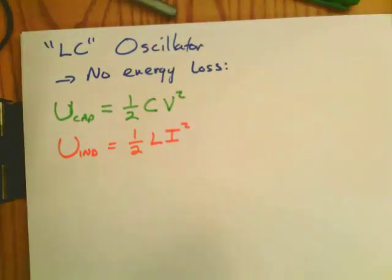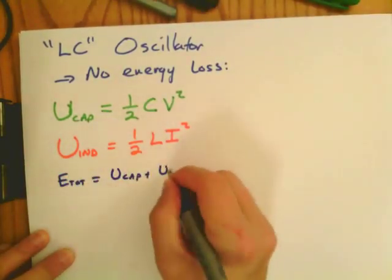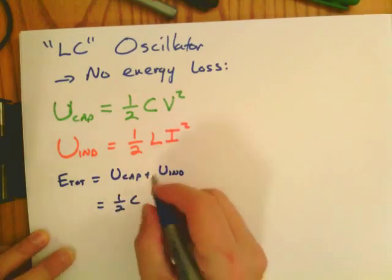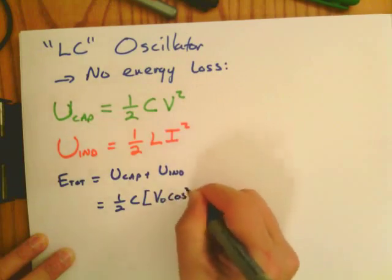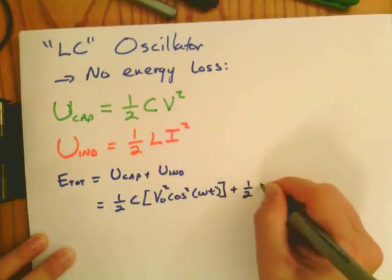So we can write down the total energy as a function of time, putting in the value, a sinusoidal value for voltage, which is a cosine function, plus the current, which is a sine function.